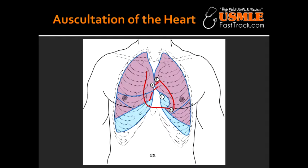What are the areas to listen to in auscultation? The areas to listen are the aortic area, pulmonary area, tricuspid area, mitral area, and the left sternal border.